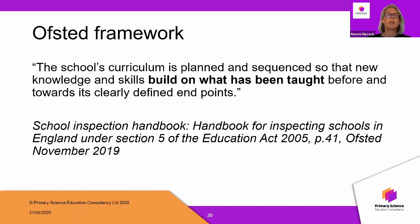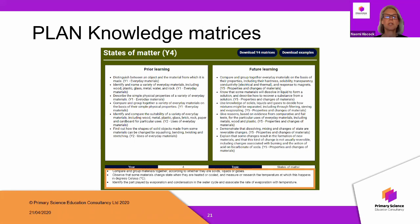We've talked about clearly defined end points, but teachers also need to be clear on where children are coming from — what we're building on and what's been taught before. The knowledge matrices can help with this. In a year four matrix, for example, you have the year four objectives at the bottom, prior learning from previous years above that, and future learning shown too — so you know what you're not covering and don't accidentally tread on the year five teacher's toes and spoil the progression through the school.